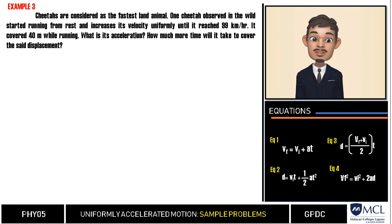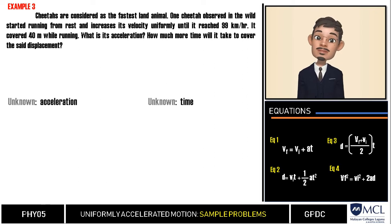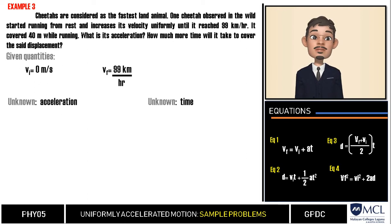There are two quantities we are asked to find in this problem, acceleration and time. First, we will list down our given values. It says here that the cheetah started from rest so our initial velocity is zero, then a final velocity of 99 kilometers per hour, and displacement of 40 meters.